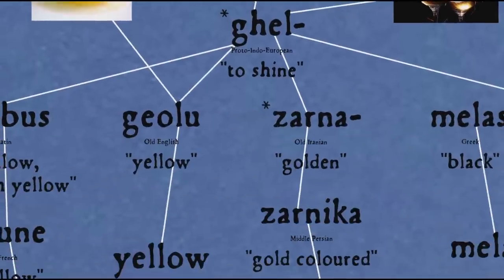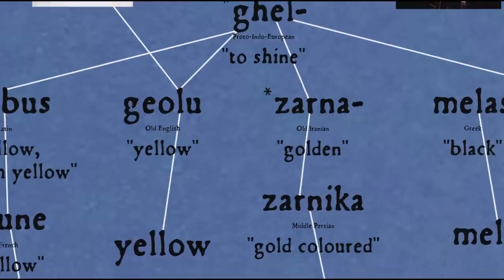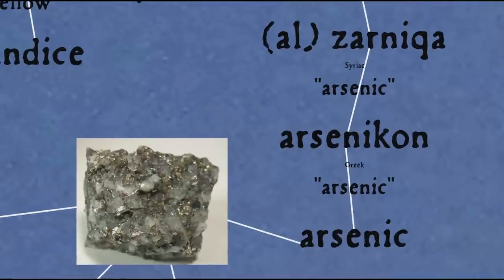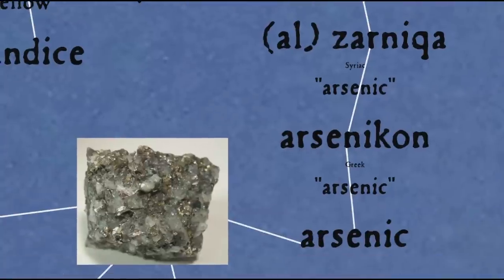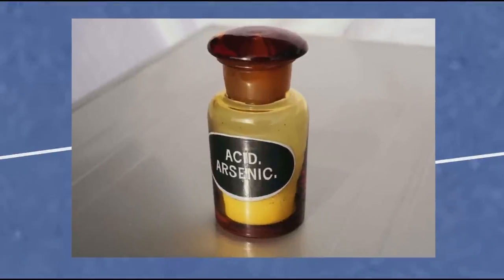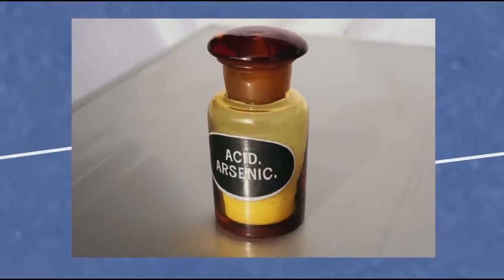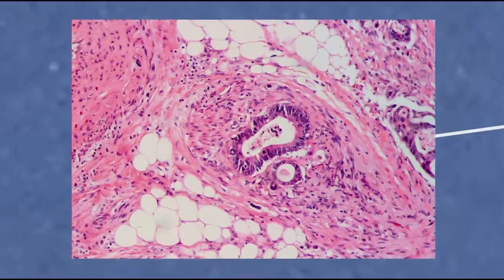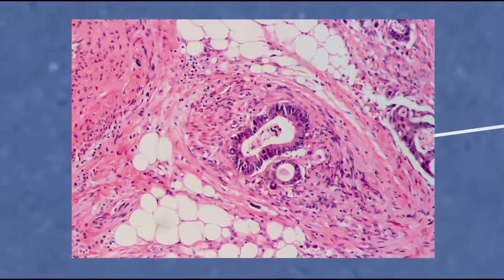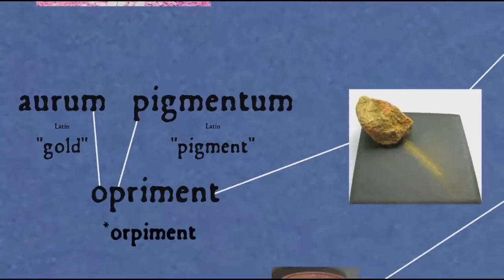The root 'ghel' also passed into the Indo-Iranian branch of languages, becoming Old Iranian 'zarna' (golden), Middle Persian 'zarnika' (gold-coloured), and Syriac 'zarnika' meaning arsenic, which after passing through Greek, Latin, and Old French ends up as the English word 'arsenic'. Arsenic has historically not only been used as a poison but as a medicine as well, for diseases such as cancer and syphilis, and is even still used in some rare circumstances. It was also used as a gold-coloured pigment and dye in its mineral form 'orpiment', a word which comes from Latin 'aurum' (gold) and 'pigmentum' (pigment), and which was also used by alchemists trying to produce gold.